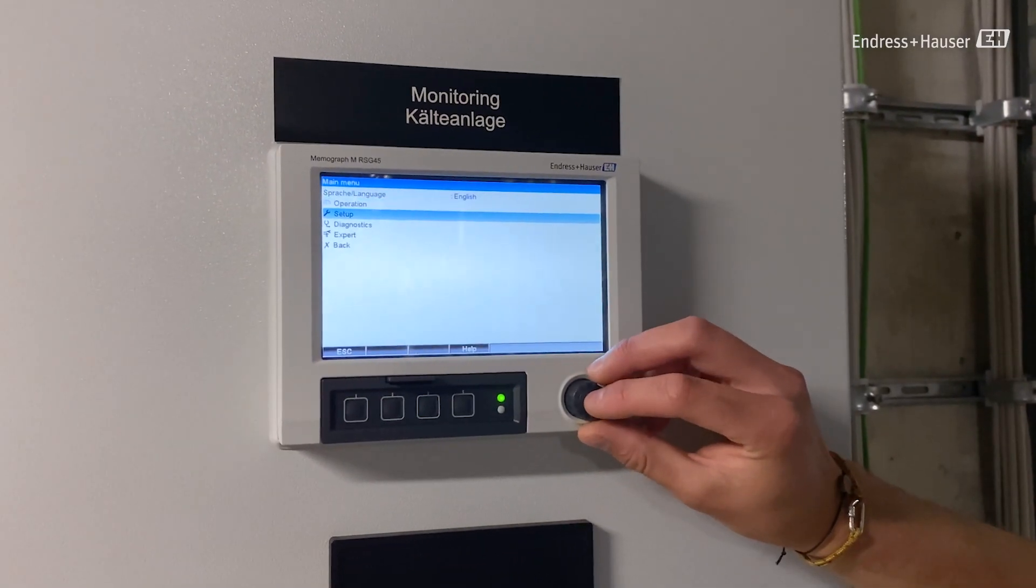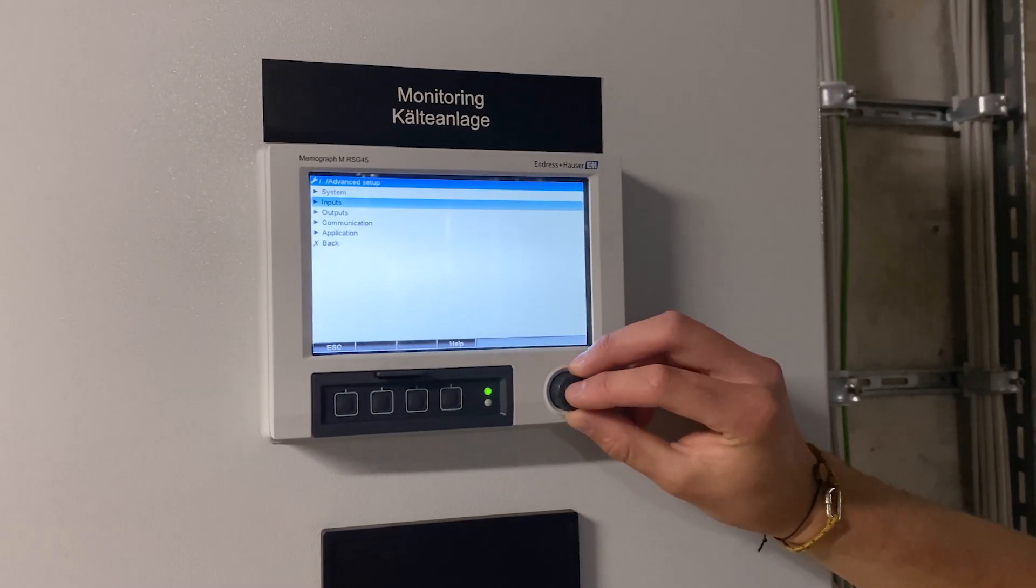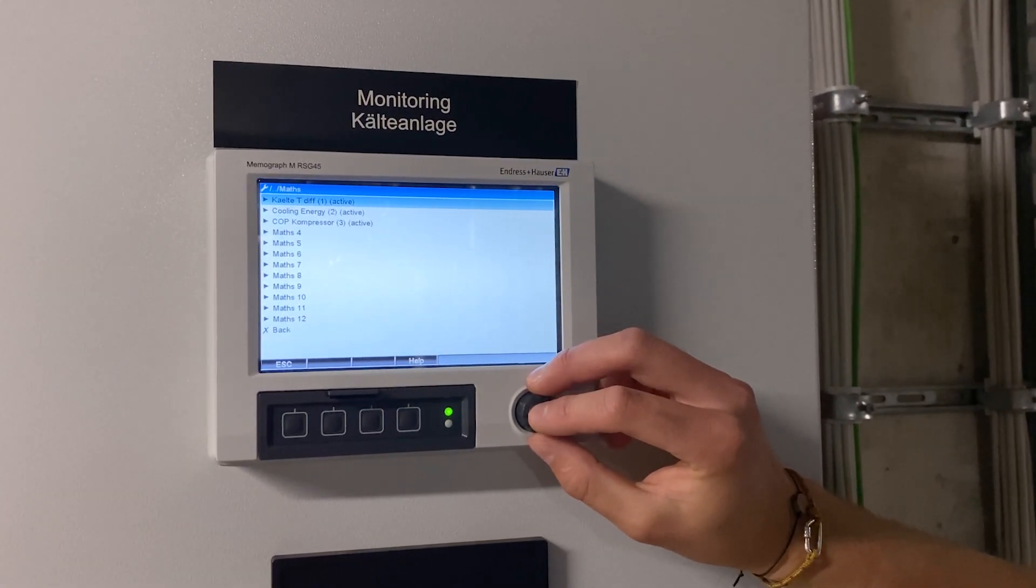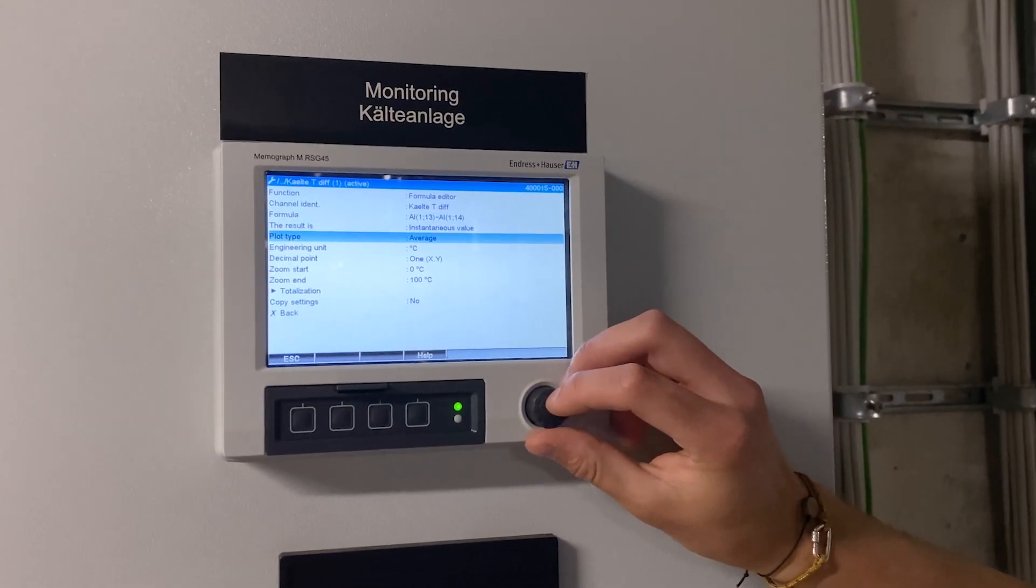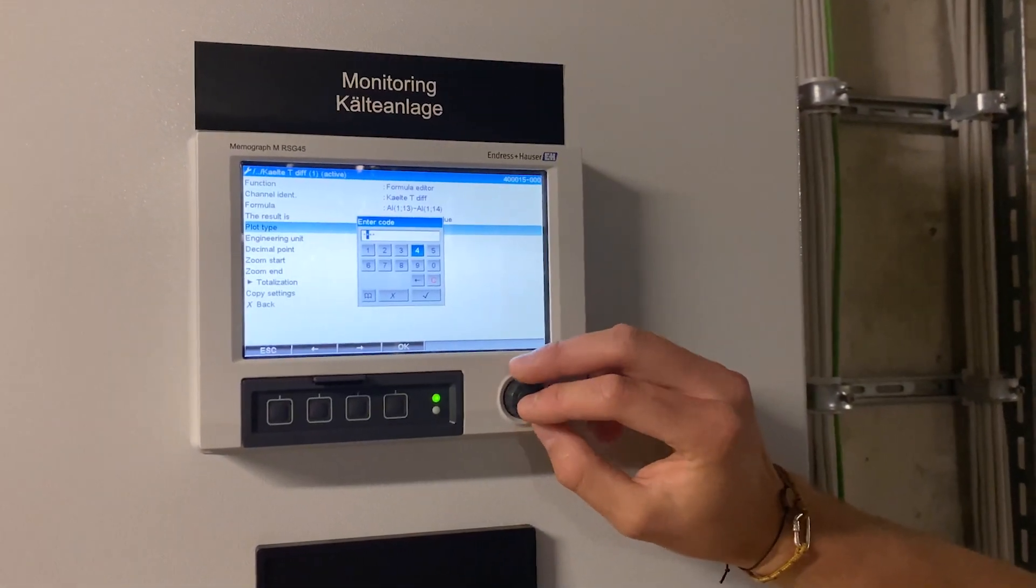With the mathematics package, measured values of the inputs or the calculated values can be linked mathematically. A formula with up to 200 characters can be created by using a formula editor. Once entered, the user can then check the plausibility of the formula.